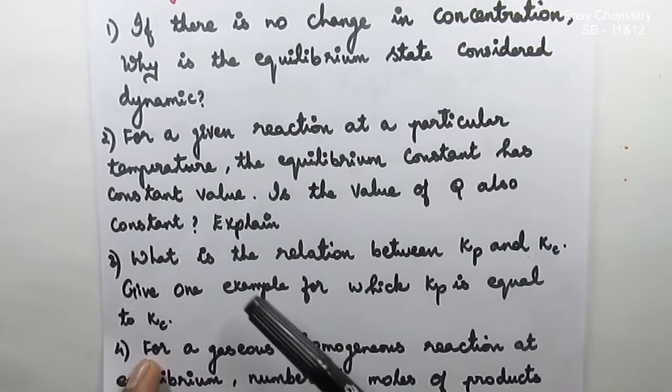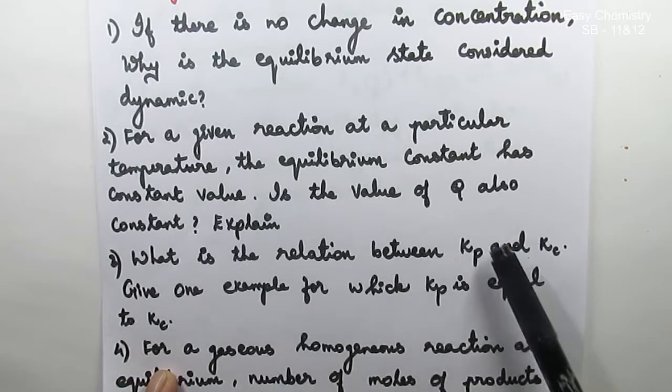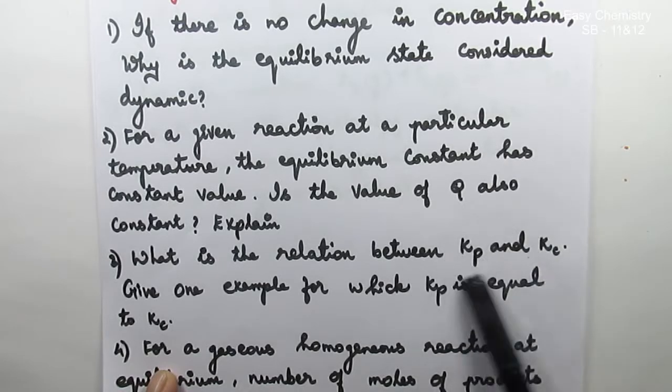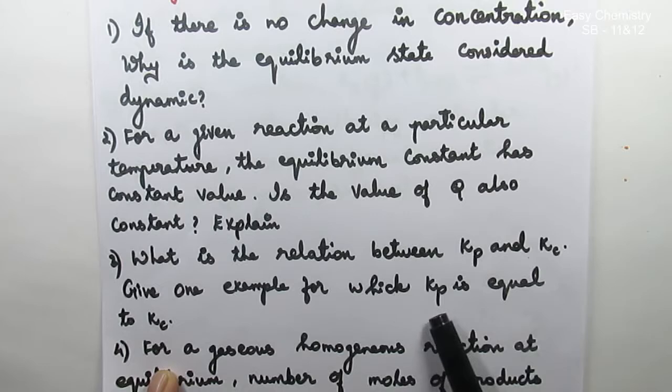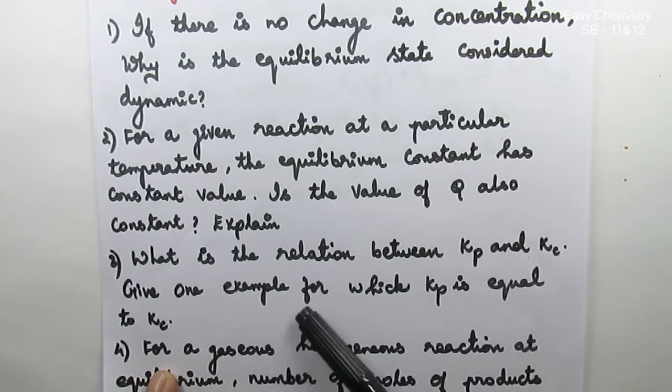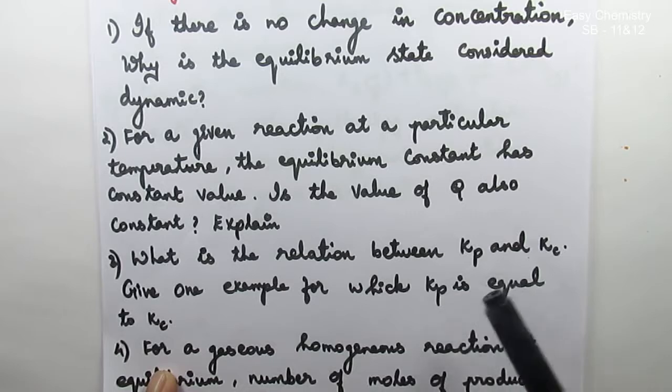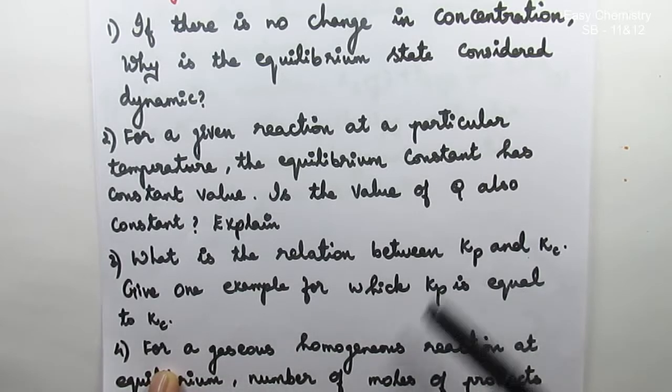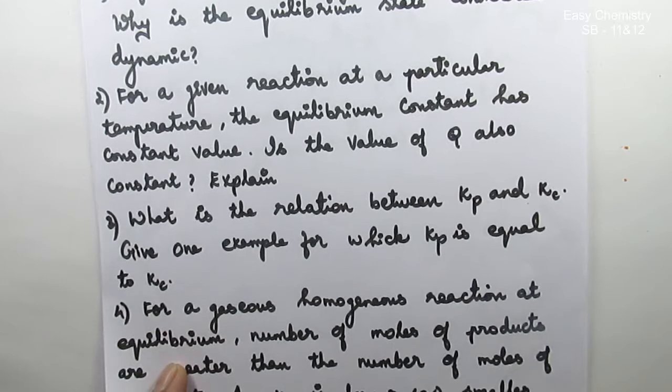Question number 3: What is the relationship between Kp and Kc? Kp is equal to Kc into RT power delta Ng. That is the example. Which is Kp is equal to Kc if delta Ng value is 0, we will work out.